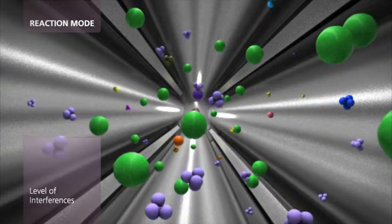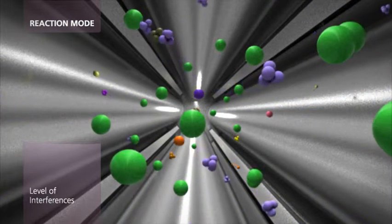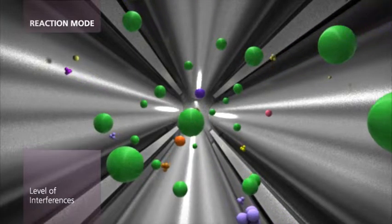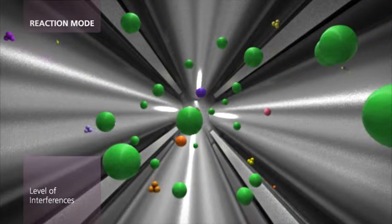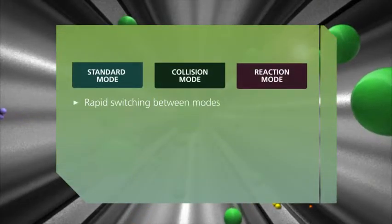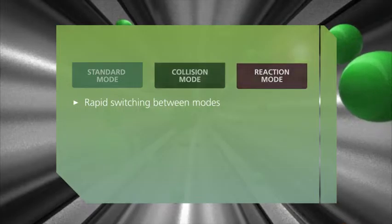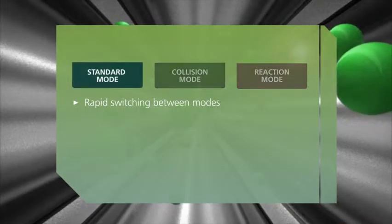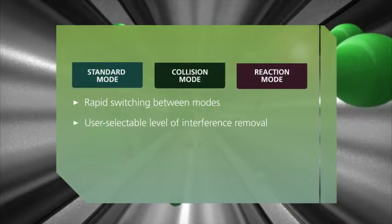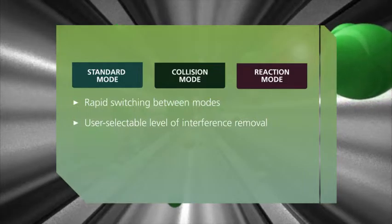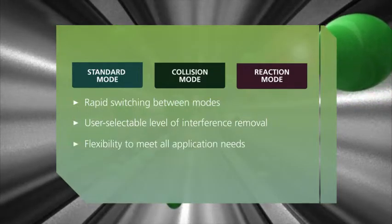By operating as both a collision cell with kinetic energy discrimination and a true reaction cell with a scanning quadrupole, Nexion's universal cell brings together the two most powerful polyatomic interference removal techniques in the same instrument for the first time. No other instrument comes close to delivering the same degree of customizable performance to ensure superior results in any and every application.